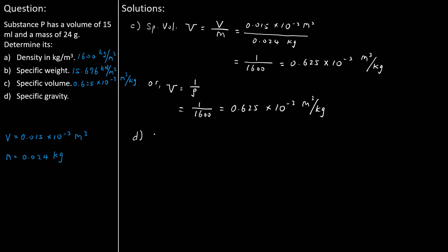Part D deals with specific gravity. Specific gravity of substance P, SG sub P, equals the density of substance P rho sub P divided by the density of water rho. That is 1,600 divided by 1,000, which gives the specific gravity of substance P equals 1.6.